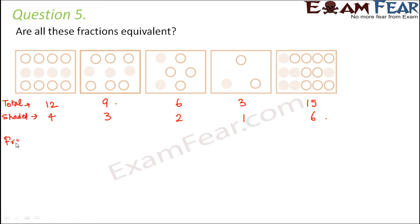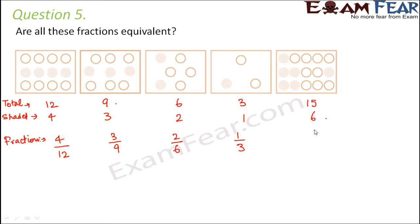Now let us find out what fraction in each of these figures is shaded. For the first one it would be 4 shaded out of 12, second one 3 out of 9, third one 2 out of 6, then 1 out of 3, and 6 out of 15.